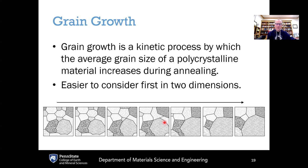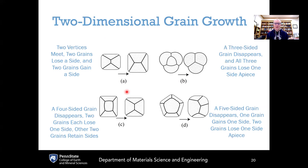In a fully dense polycrystalline material made up of many grains, the question is how grain boundaries evolve over time. Grain growth is a kinetic process by which the average grain size of a polycrystalline material increases during annealing or thermal treatment. This is a complex problem, made easier by considering it first in two dimensions.